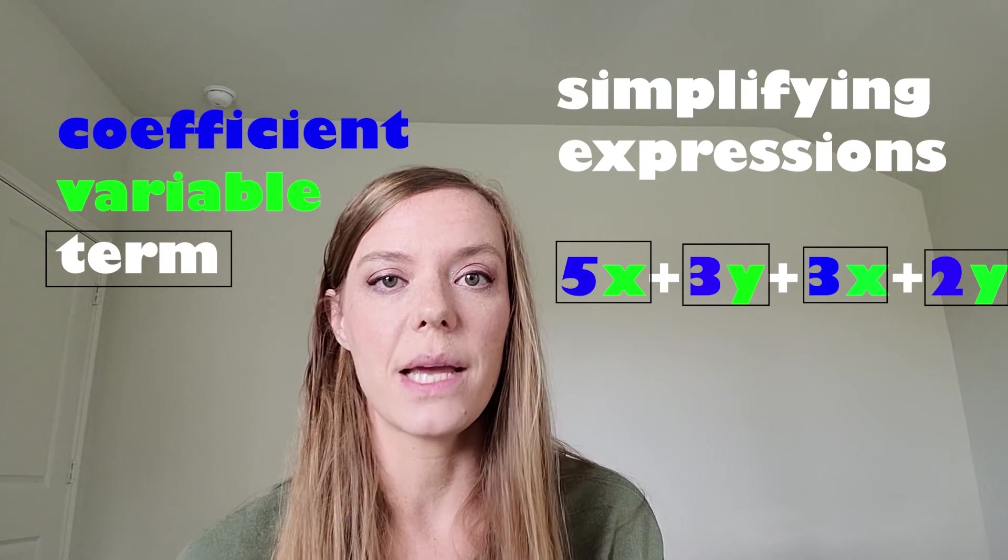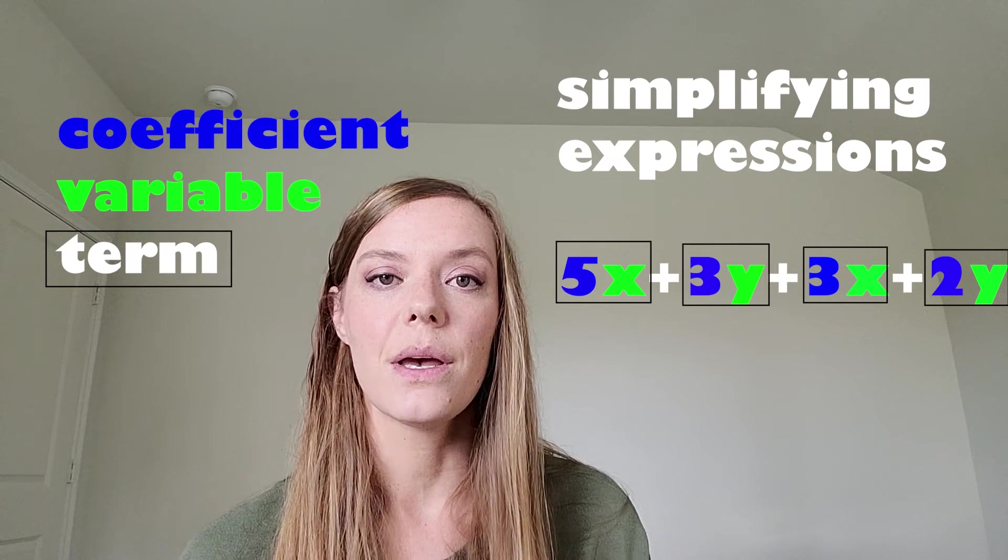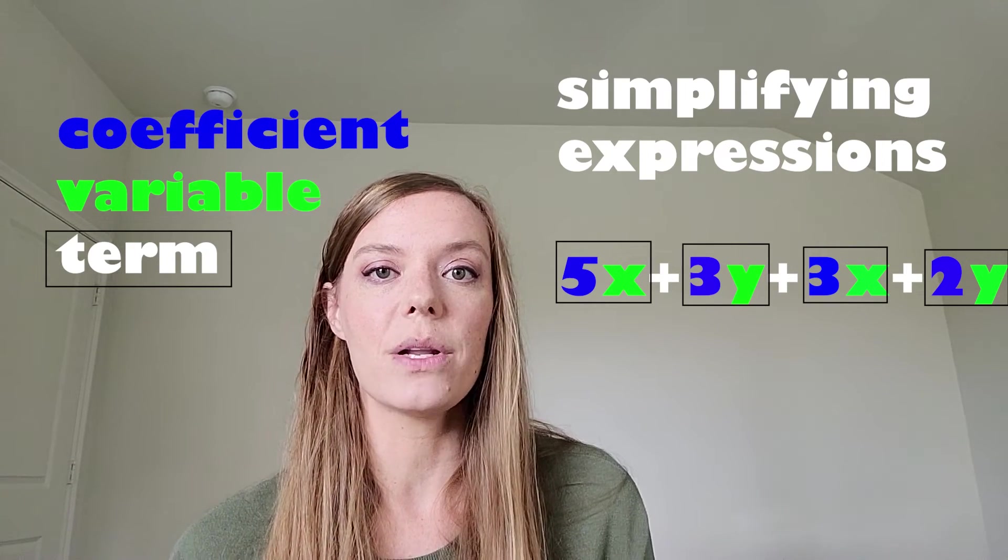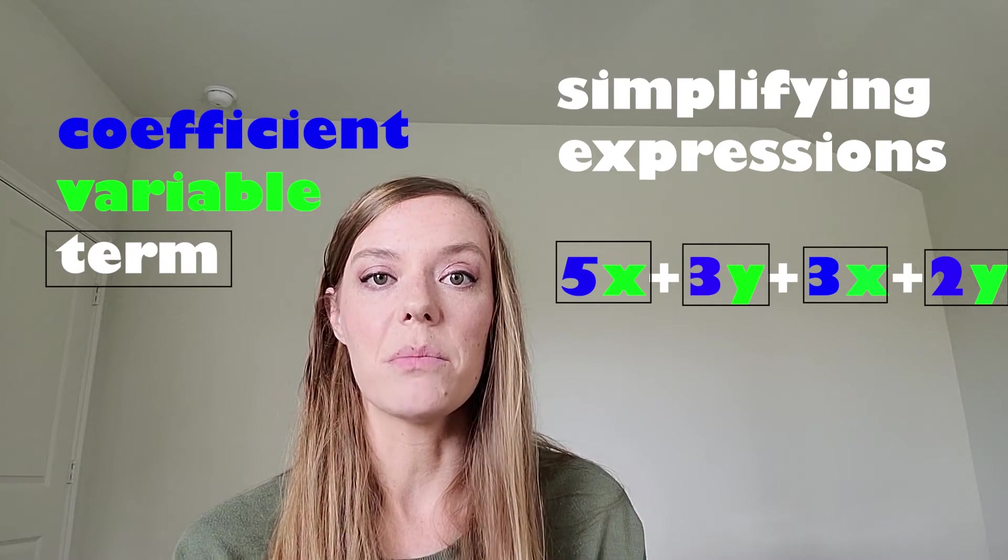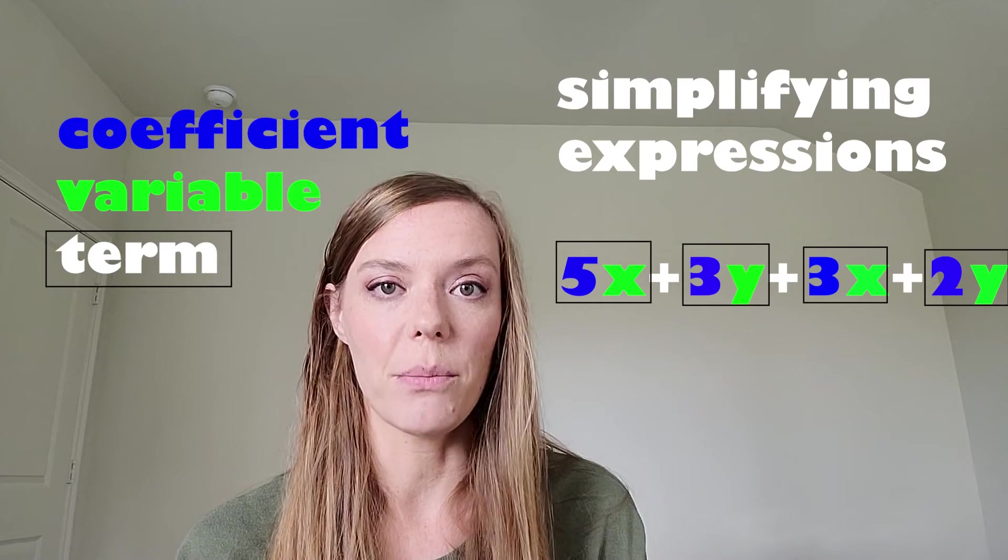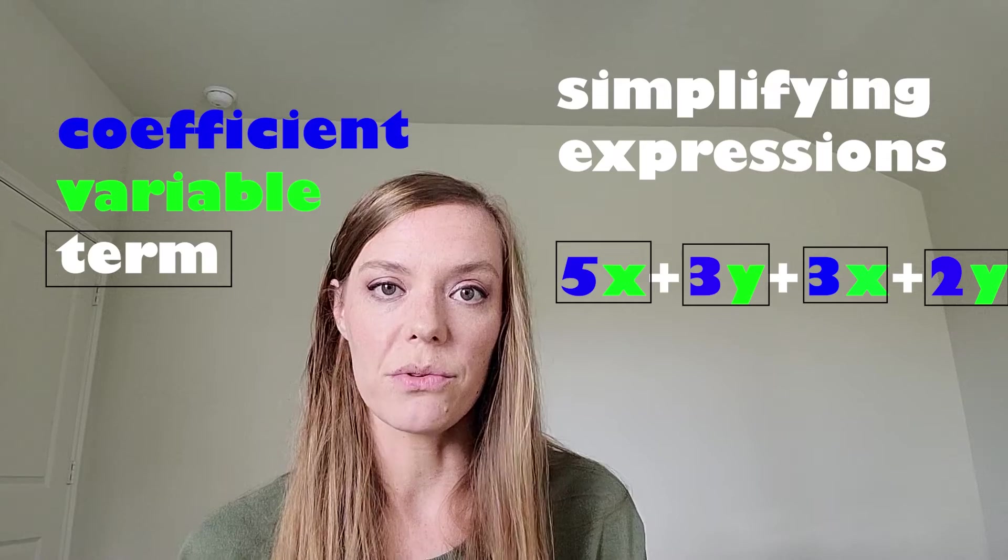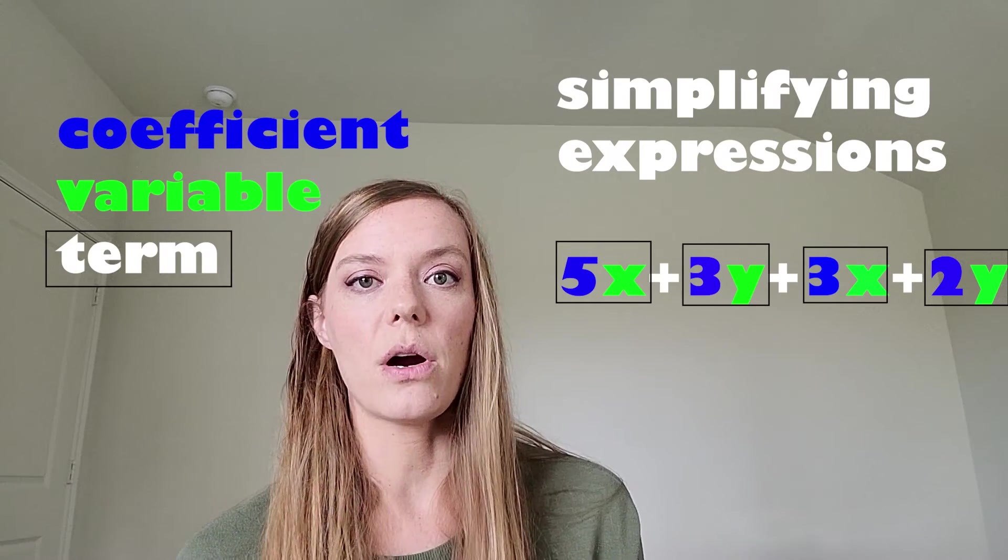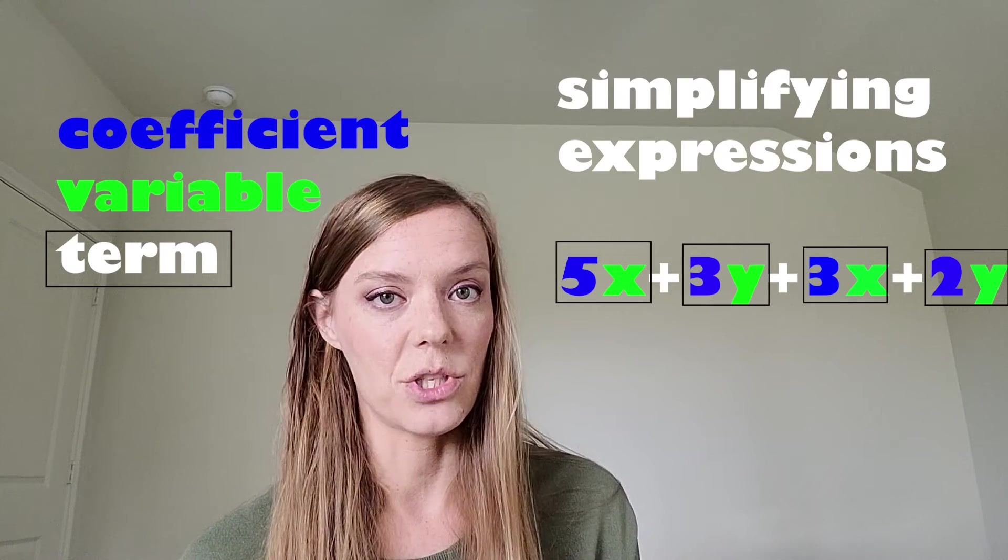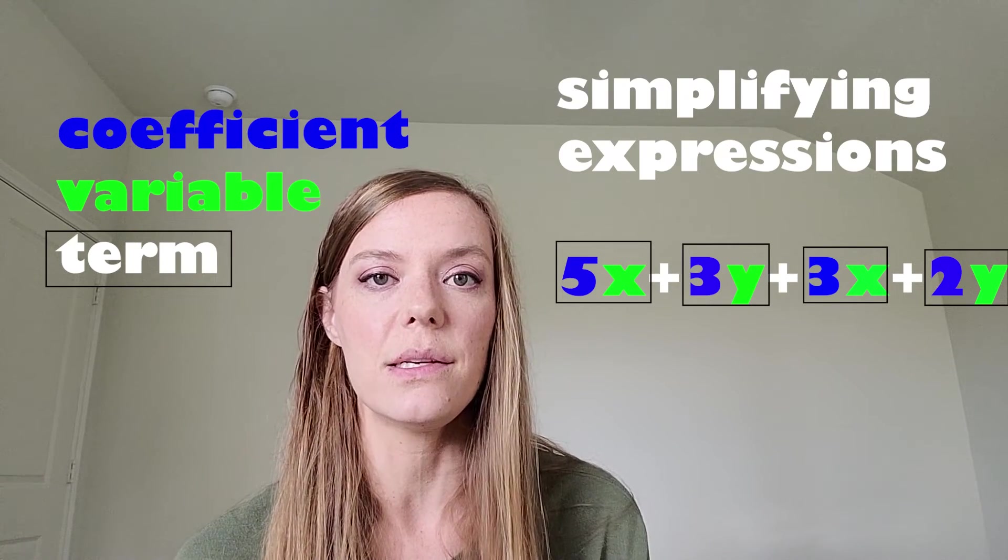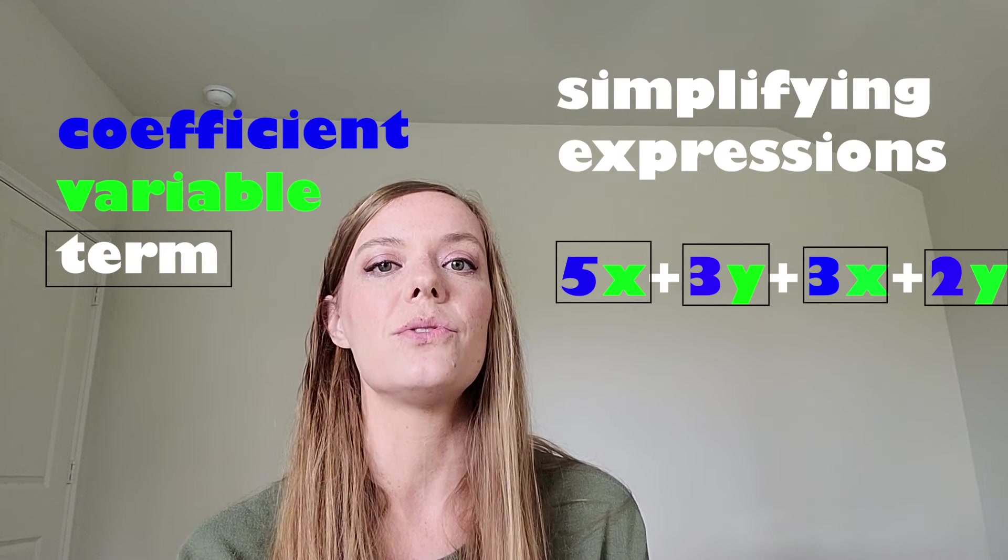And then the whole thing, the coefficient and the variable, they are called a term. So you're going to hear me saying things like let's combine like terms, and what I mean by that is I want us to, in this case, add terms that look the same. So they have the same variable, the same letter along with them, and you can work with those. So in this case, let's rearrange our expression to get those like terms next to each other. I think that's so helpful when you're first learning this because then it will look a little easier to then do the adding.